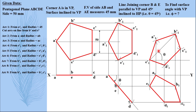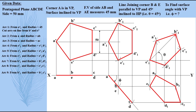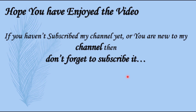As per the given data everything is correct — the line joining corners B and E is parallel to VP and 45 degrees inclined to HP. This is theta, the inclination with HP, and the line joining B and E is parallel to XY, so all conditions are satisfied. If you do all these steps correctly on your sketchbook, the angle phi which has to be found out will be approximately 49 degrees. Hope you enjoyed the video. If you haven't subscribed yet, please subscribe, like, and share with your friends. Thank you for watching.